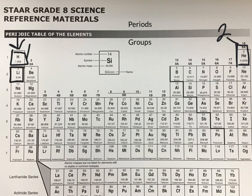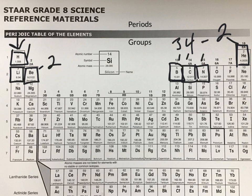Lithium is going to have one valence electron. Beryllium is going to have 2. Boron has 3 valence electrons. Carbon has 4. Nitrogen has 5. Oxygen has 6. Fluorine has 7.